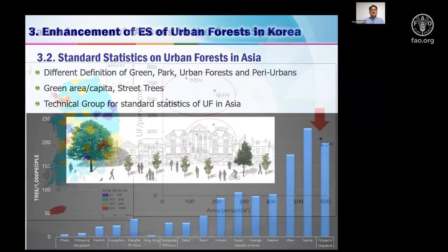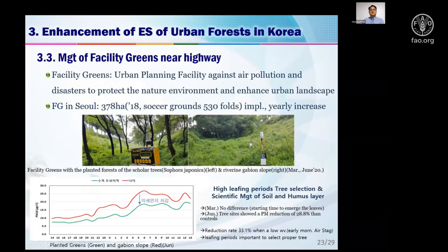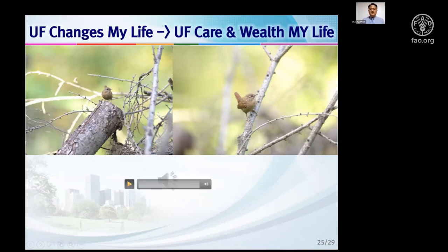In the Korean peninsula, we calculated access to green space. Usually we compare the area of green space, but I think it's time to compare access to green space. If we assume a walking speed of 4 kilometers per hour, what is the nearest green space reachable within 15 minutes? Assessing this 15-minute walking access is very important to evaluate green space in Korea, and we have just started trying to do this.